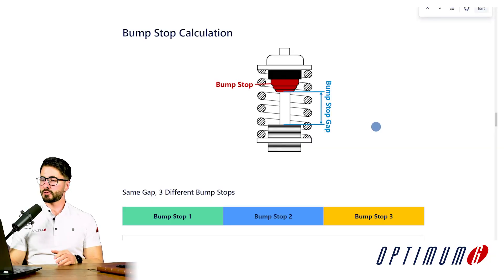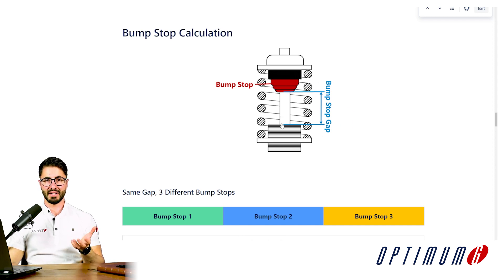Now that we have springs and anti-roll bars defined, we can look at bump stops. A bump stop is a component with very high stiffness that is not engaged the whole time. You have a bump stop gap, meaning the suspension can compress a given amount before you engage the bump stop and increase the stiffness of the system. You use bump stops when you want to control the car differently at low loads and high loads — for example, a soft suspension for good ride behavior at low speeds, but preventing the car from bottoming out at high speeds.